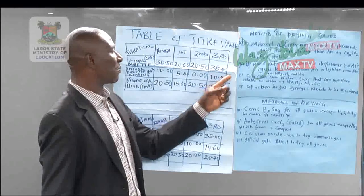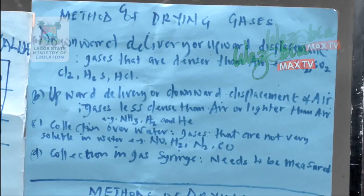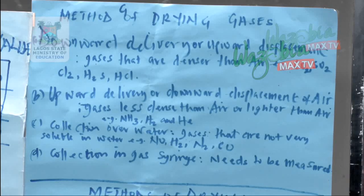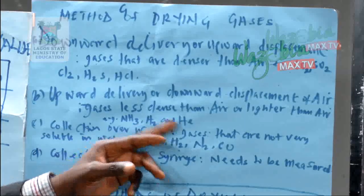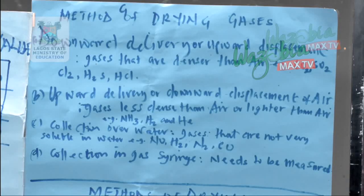Then the other method is upward delivery, or downward displacement of air. It is used to collect gases that are less dense or lighter than air — for example, ammonia, hydrogen, and helium. Those are the gases we can collect using upward delivery or downward displacement of air because they are lighter than air.